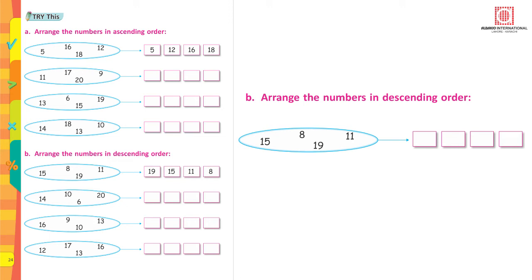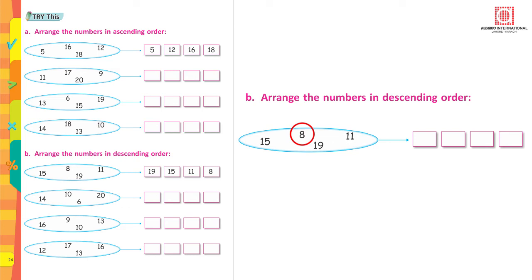In the next section, you have to arrange the numbers in descending order. Descending order means coming down from the biggest to the smallest. The first one has been done for you. There are 4 numbers given in this set. Which is the biggest number out of all? 19. And the next biggest is 15, then 11, and 8 is the smallest. So we are going to write the biggest number first: 19, 15, 11, and 8.